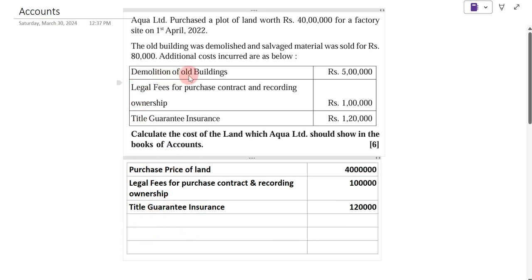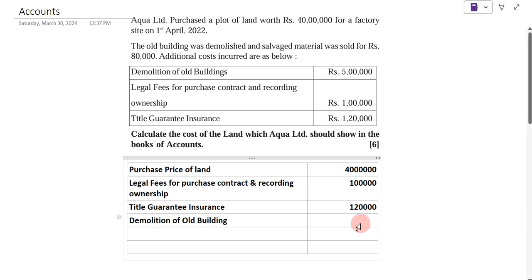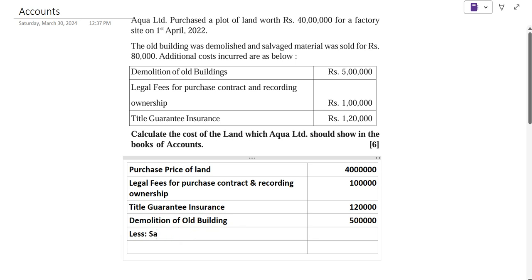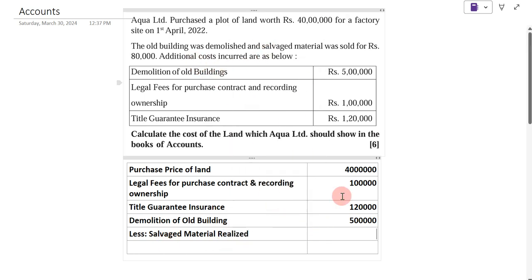Then, add demolition of old building, which is Rs. 5,00,000. Now from this, we have to deduct the salvage material. The salvage material was sold for Rs. 80,000, so less salvage material realized Rs. 80,000.